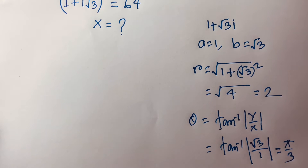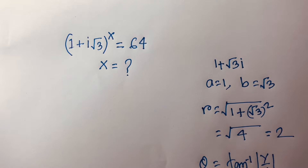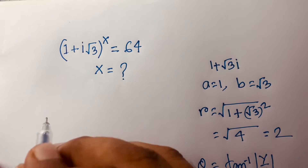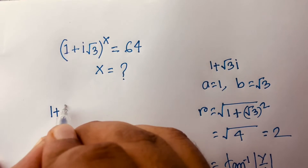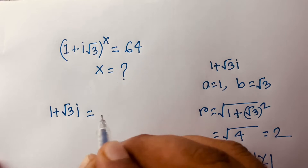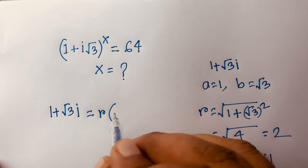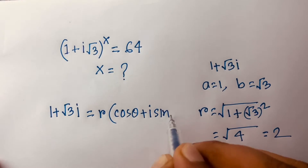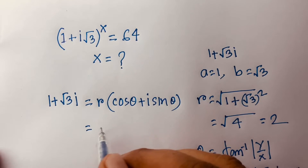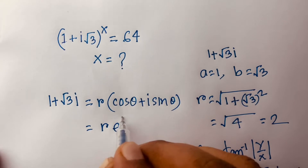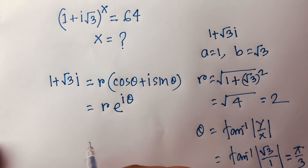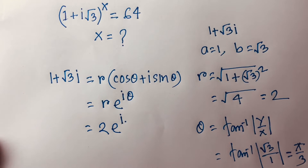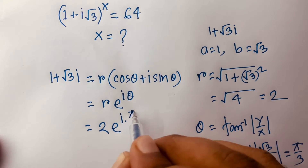Our expression is (1 + i√3)^x. We can write 1 + √3·i in polar form as r(cosθ + i·sinθ), which equals r·e^(iθ). Here r = 2 and θ = π/3, so 1 + √3·i = 2e^(iπ/3).